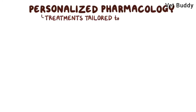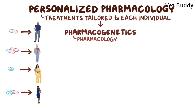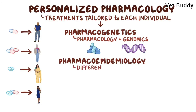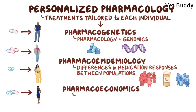We're moving toward an era of personalized pharmacology, where medical treatments are tailored to the characteristics of each individual. New fields include pharmacogenetics, which combines pharmacology with genomics and uses genetic profiles to pair the right medication at the right dose to the right person. There's also pharmacoepidemiology, which accounts for differences in medication responses between populations, and pharmacoeconomics, which evaluates the costs and benefits of medications used in populations.